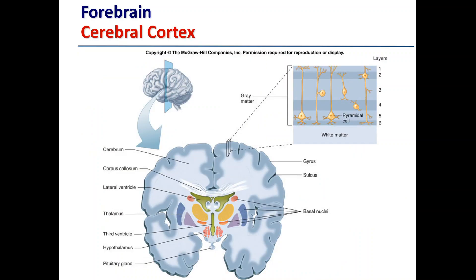Looking specifically at the cerebral cortex — involved in motor planning, planning of movements, coming up with a movement program, and initiating contractions — the cerebral cortex is on the outside of the brain and gives it the familiar folded shape. The reason for these folds is to pack as many neurons as possible into the available space within the skull. The more neurons packed in, effectively the greater the cognitive capacity.